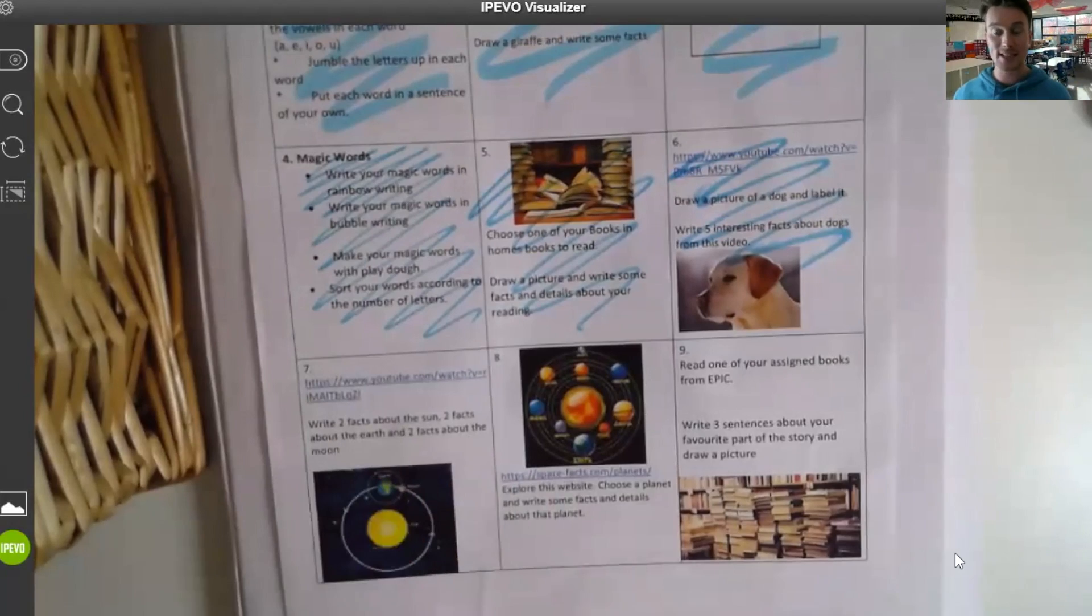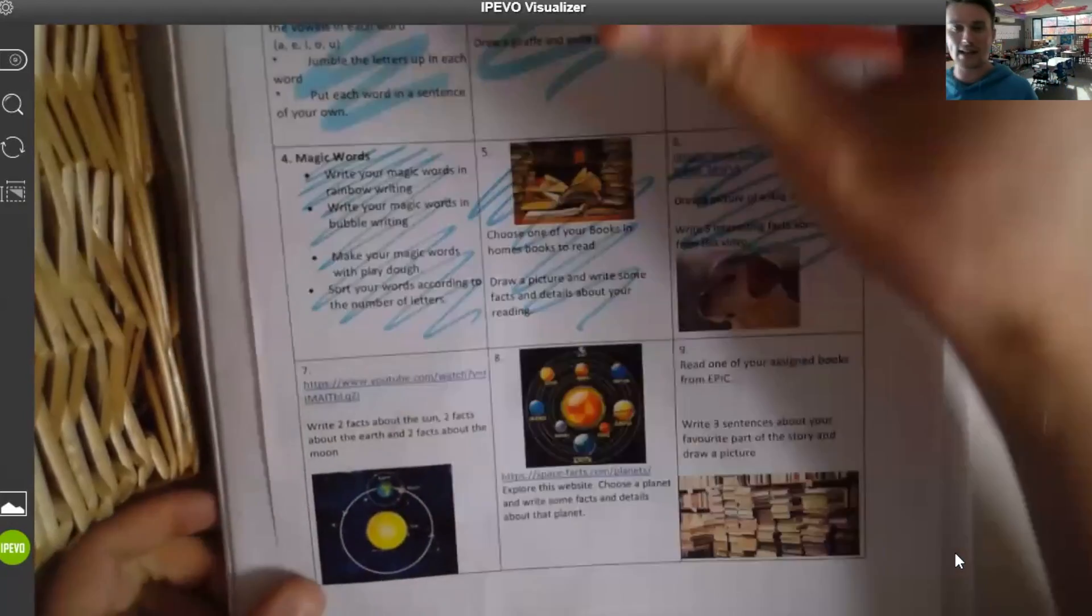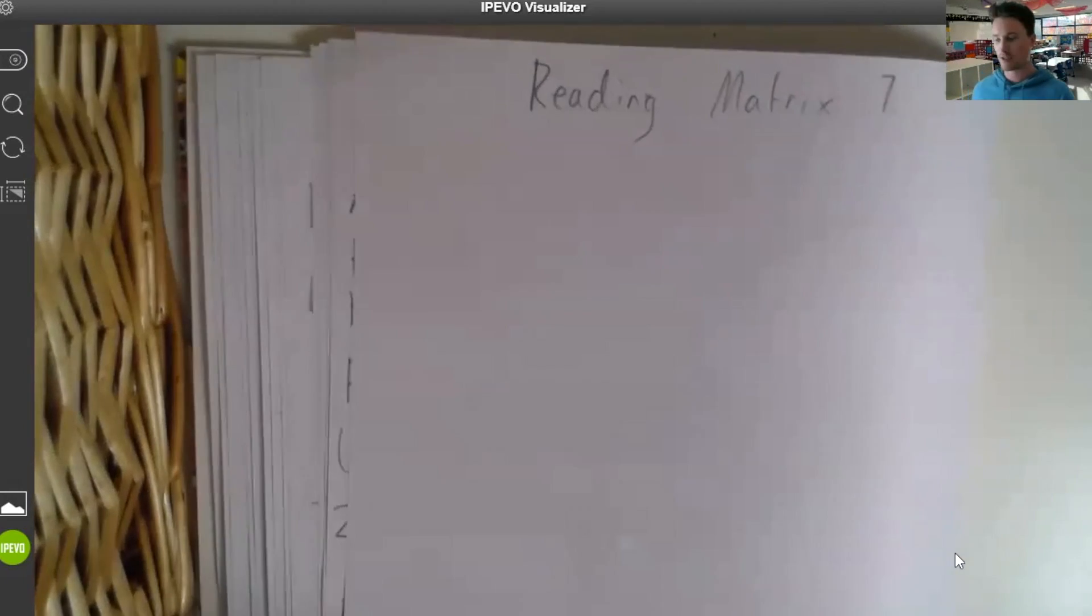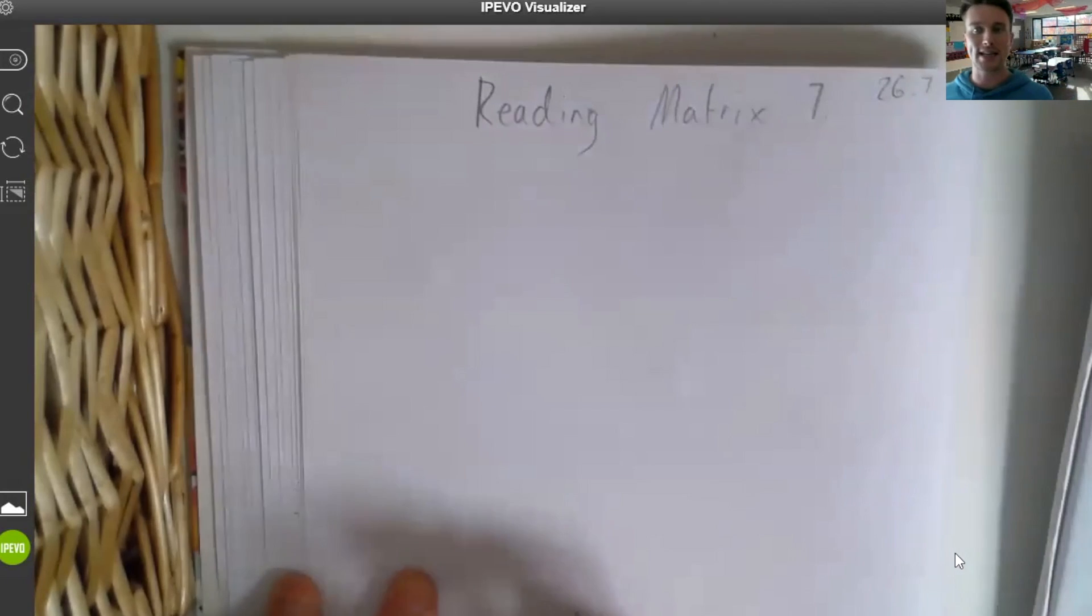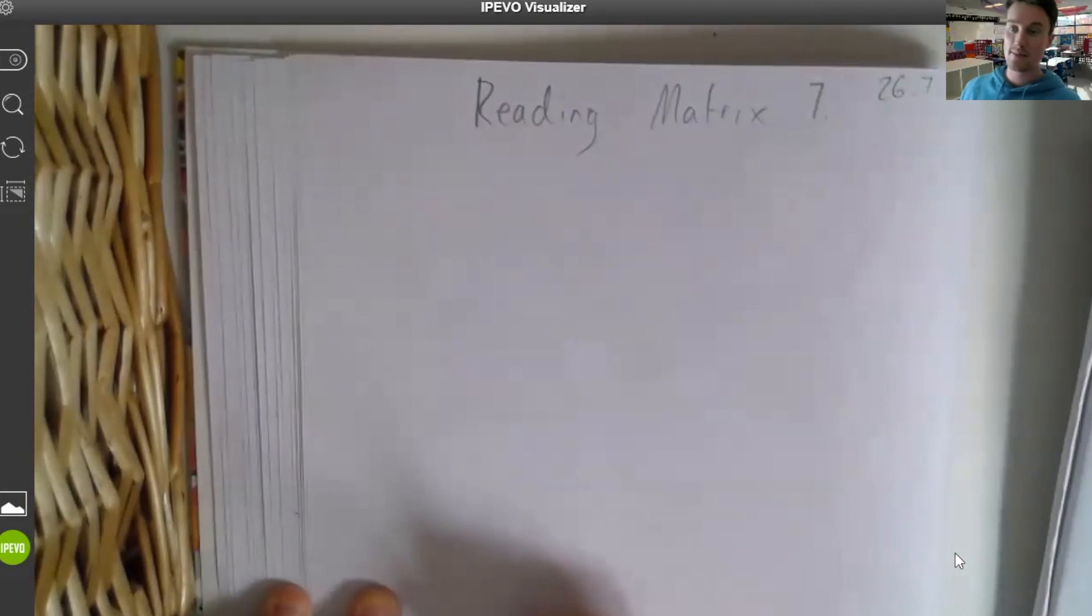So here we have, write two facts about the sun, two facts about the earth, and two facts about the moon. Okay, so all are six different facts that we've got. So what I would like you to do is start by making this your title. Reading matrix number seven and make sure you've got the date at the top. So please do that, pause the video, do that, and then come back.